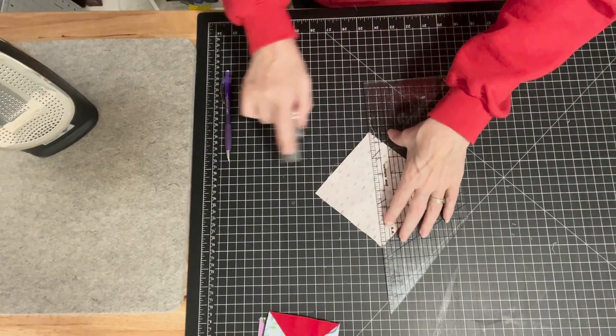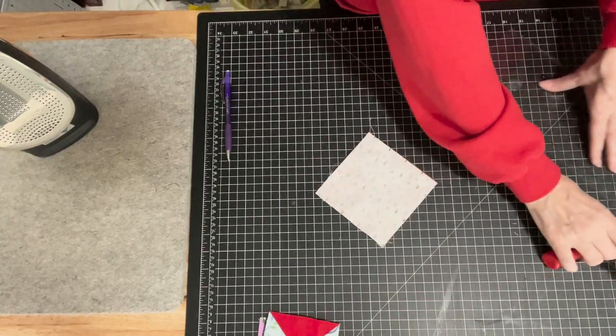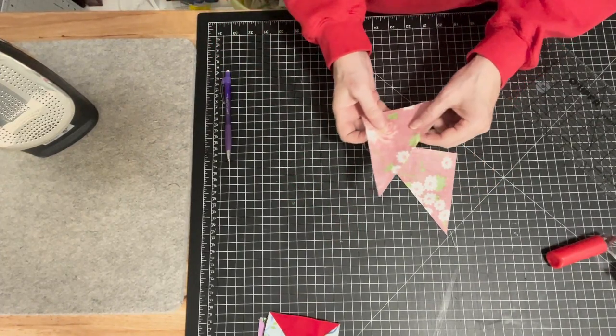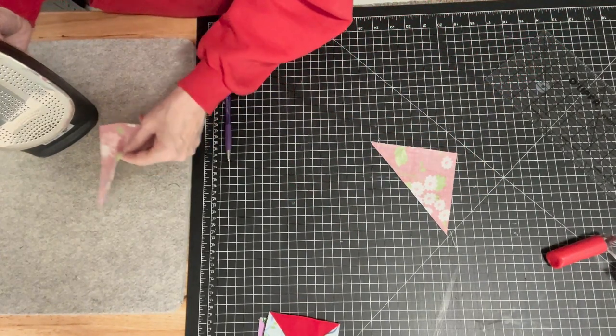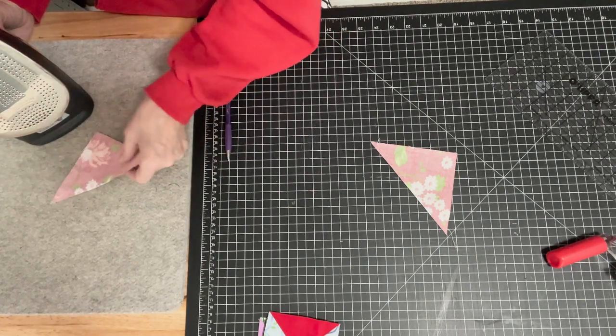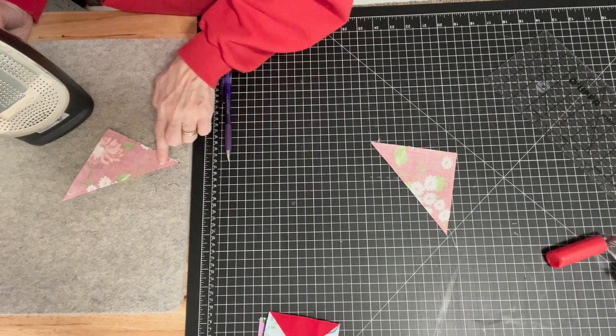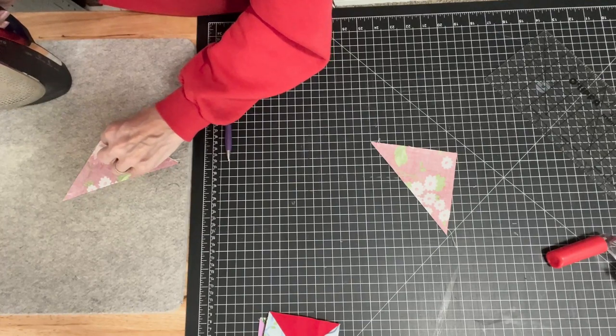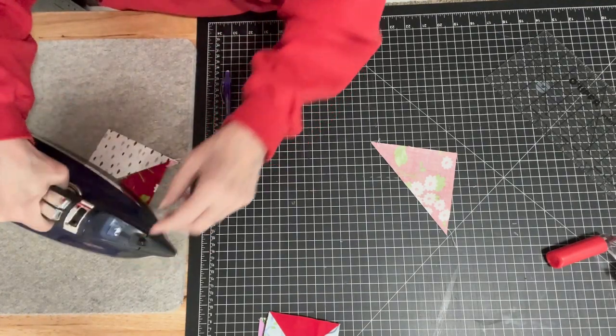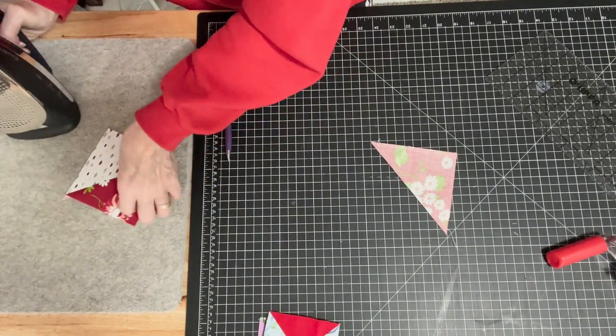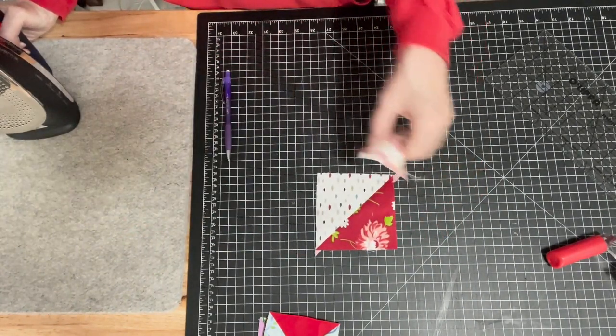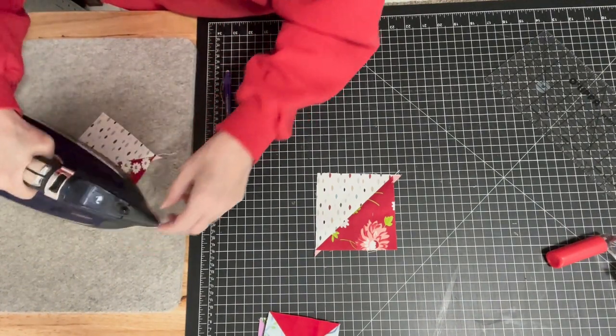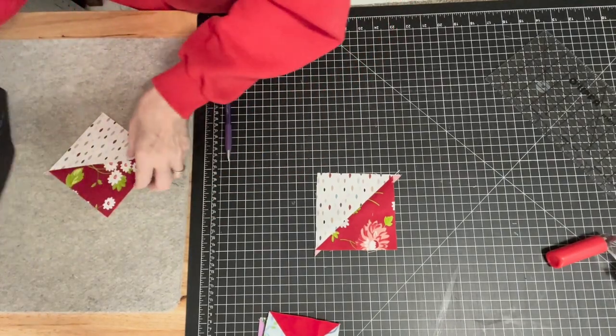I've sewn a quarter inch on either side. Then I'm going to cut that right down the middle where I drew the line, and I end up with two half square triangles. I'm going to put them on my ironing board with the dark side facing up, iron that to set the seam, and then roll that back so that I have two half square triangles. I'm going to press the seam to the dark side.